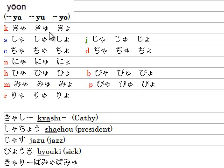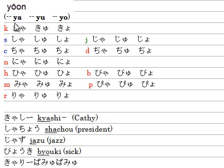For kya, kyu, kyo — the ki is a k-row, so you type K-Y-A for kya, K-Y-U for kyu, K-Y-O for kyo. Y is called a double consonant because K and Y are both consonants, so it's a double. That gives you kya, kyu, kyo.